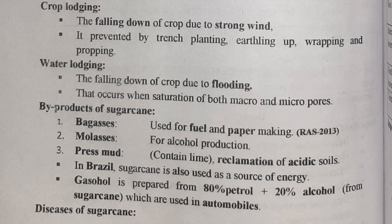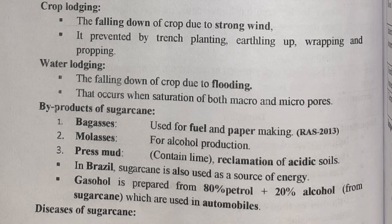Byproducts of sugarcane: bagasse, used for fuel and paper making; molasses, used for alcohol production; and press mud, which contains lime and is used in reclamation of acidic soil. In Brazil, sugarcane is also used as a source of energy — gasohol is prepared from 80% petrol plus 20% alcohol, which is used in automobiles.